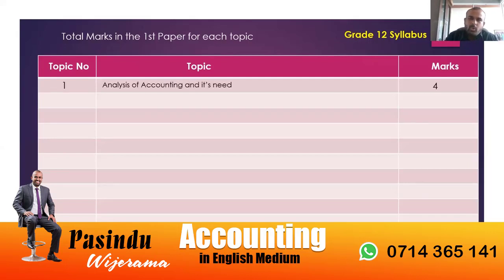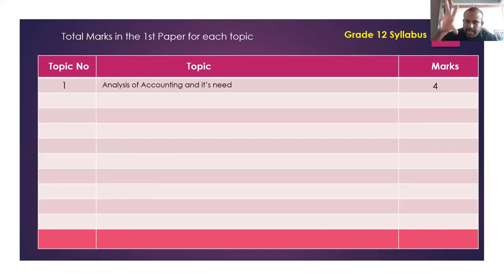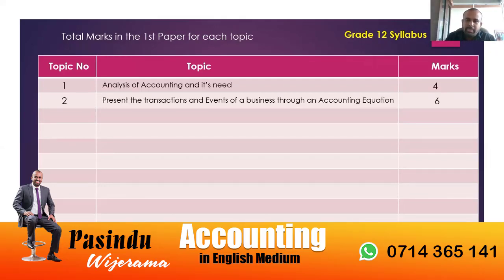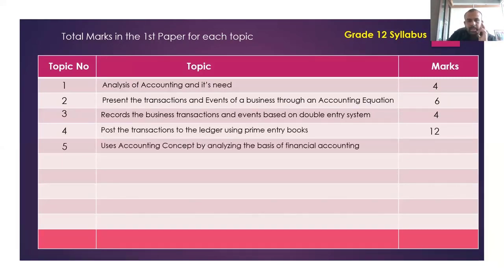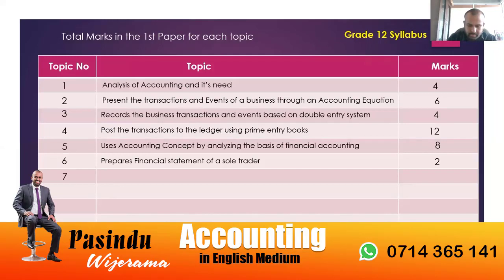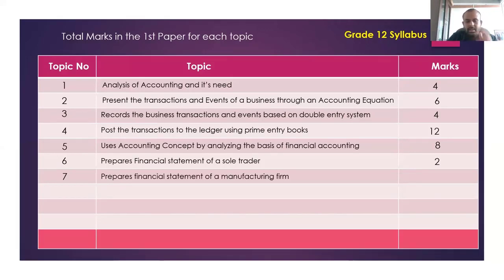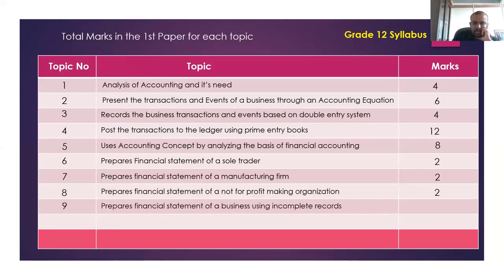Topic number one: four percent has been tested — four marks. Second topic: six percent, again six marks out of 106. Third topic: four marks. Fourth topic: 12 marks — there were six questions from the accounting concepts. Eight marks from the financial statements, two marks. In manufacturing accounts it's two marks, not-for-profit making two marks, incomplete records no marks.